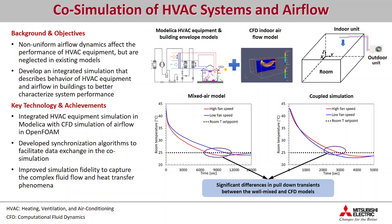With the well-mixed assumption, the simulation shows that high fan speed pulls down the room temperature faster than low fan speed. This seems consistent with our expectation. However, with the CFD airflow model, the simulation shows the opposite. This is very counter-intuitive, but our data does support the co-simulation results. This is because the indoor airflow is more well-mixed and turbulent with high fan speed and pulls more heat out of the walls into the room. But this augmented heat load cannot be offset by the increased cooling capacity delivered by the air conditioner due to the increase in airflow speed.